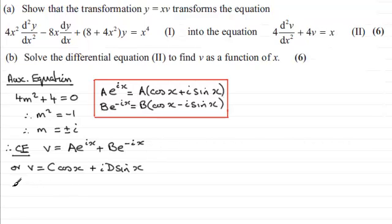Now we need to find a particular integral, PI for short. For this, because we've got x on the end here, I'm going to say let that particular integral be of the form v equals a constant k times x.